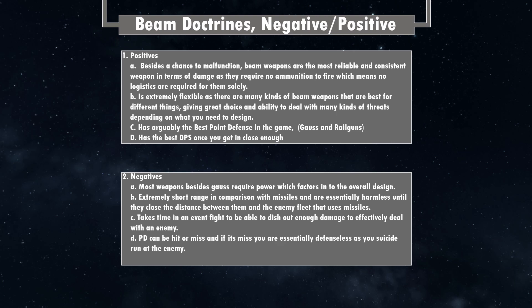Beam doctrine negatives. Negative A: most beam weapons besides gauss require power plants, meaning you must factor power into the design. Though this is somewhat offset by missiles requiring magazines and launchers. Negative B: beam weapons are extremely short range compared to missiles — essentially harmless until they close the distance. You'll be tanking missile hits while closing in, which is why speed is so critically important for beam weapon ships.